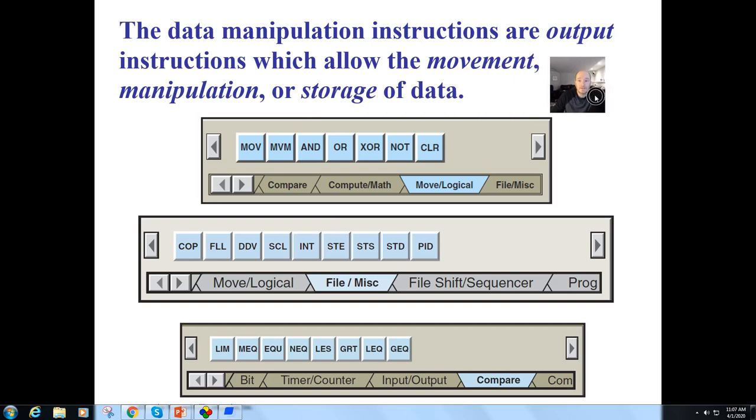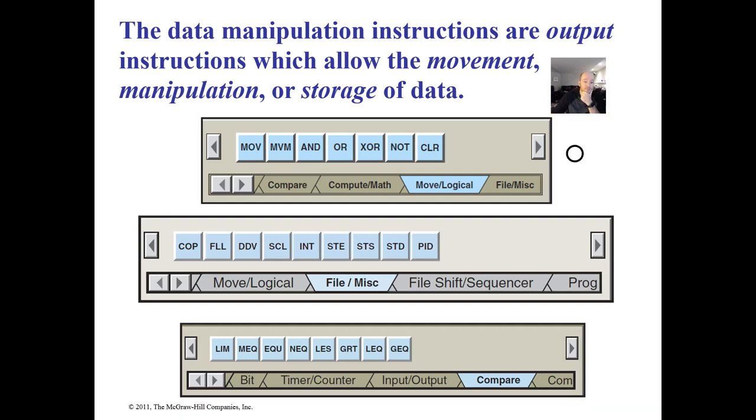So the data manipulation instructions are outputs. This is important. That means they're being controlled. They can be controlled by any input or any set of logic or none at all. They can just be sitting there, just monitoring and moving things from one location to another. This allows the movement, manipulation, and the storage of data if we want to collect it for a specific reason.